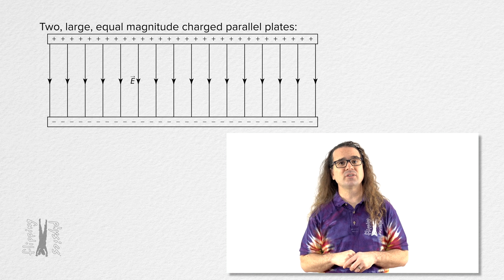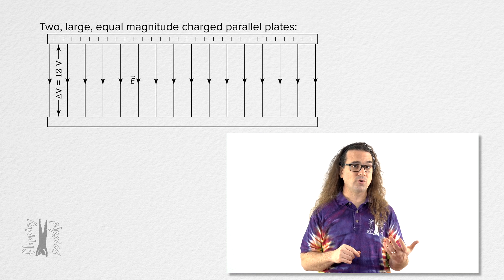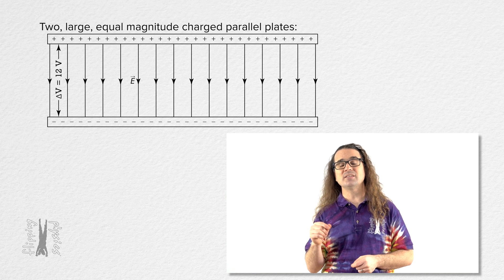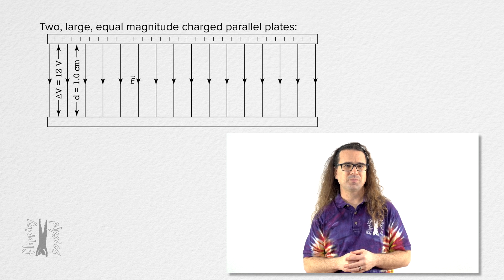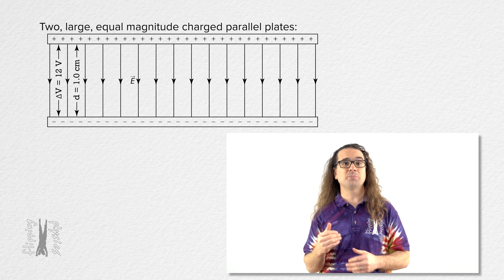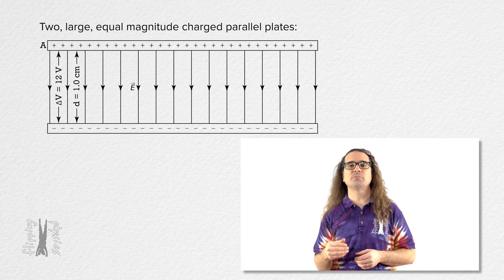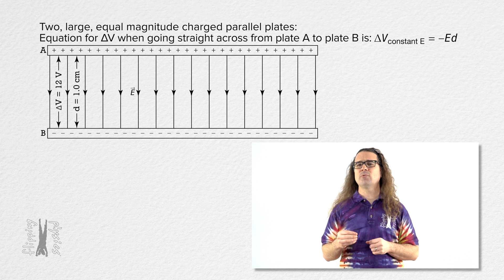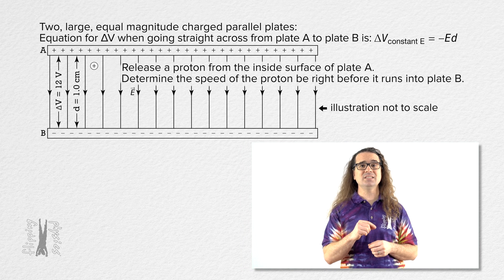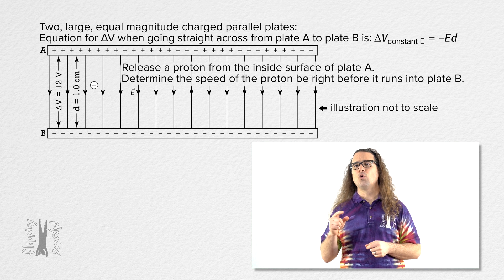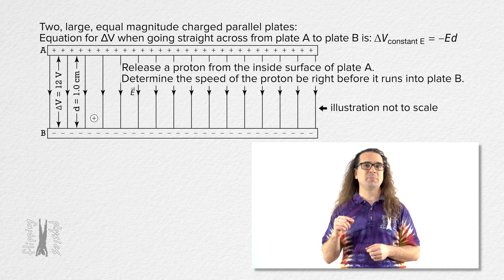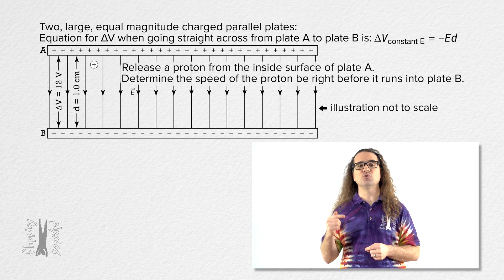Let's say the electric potential difference between the two plates is 12 volts and the distance between the two plates is 1.0 centimeters. Let's define the top plate as plate A and the bottom plate as plate B. If we release a proton from the inside surface of plate A, what will the speed of the proton be right before it runs into plate B?